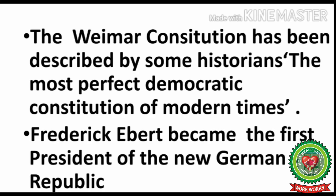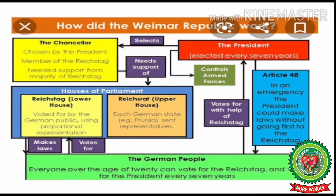It was the first time Germany adopted the democratic system, and Frederick Ebert became the first president of the democratic government. On your screen you can see the working of the Weimar Republic. The highest authority was the president, who had the power to choose the chancellor from among members of the Reichstag. The Weimar Republic supported a bicameral legislature — the Reichstag as the lower house chosen directly by the people, and the Reichsrat as the upper house. Article 48 allowed the president to make laws even without going to the Reichstag during an emergency, making the president's position stronger in such times.